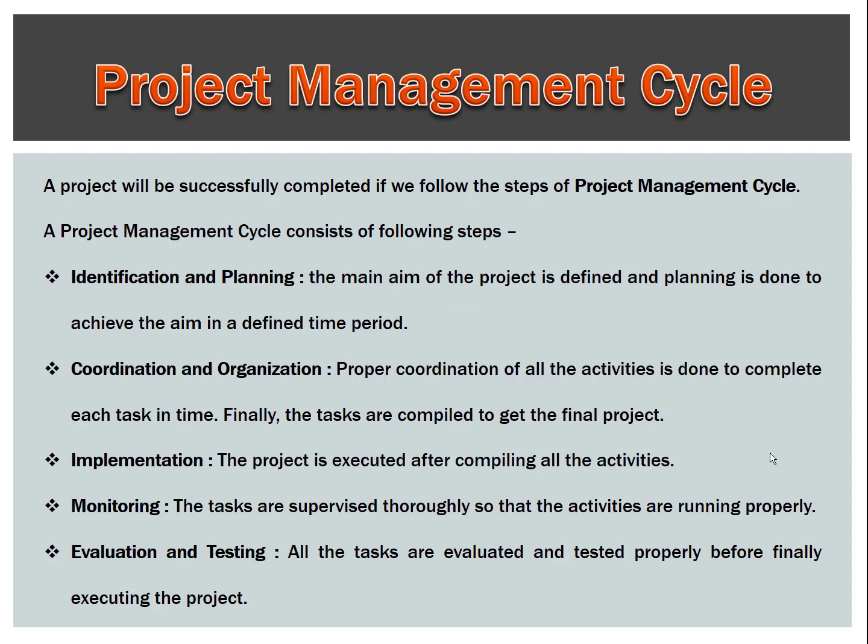Project management cycle: A project will be successfully completed if we follow the steps of the project management cycle. The first step is identification and planning, where the main aim of the project is defined and planning is done to achieve the aim in a defined time period. The second step is coordination and organization, where proper coordination of all activities is done to complete each task in time. Finally, the tasks are compiled to get the final project.